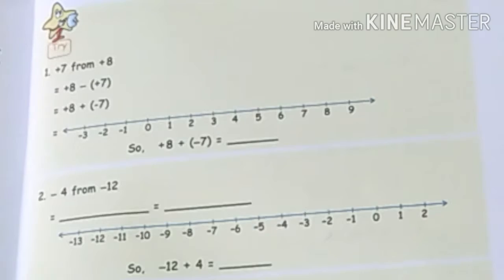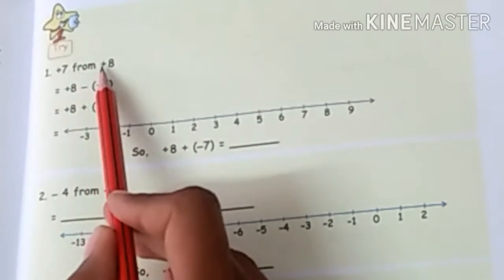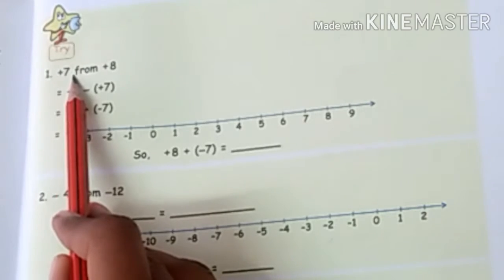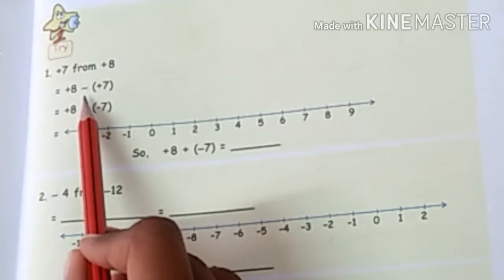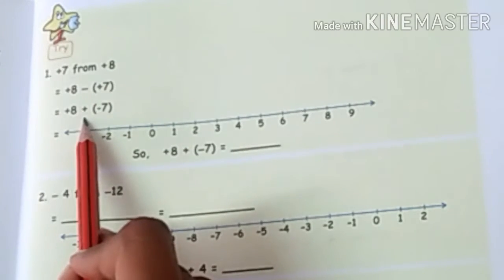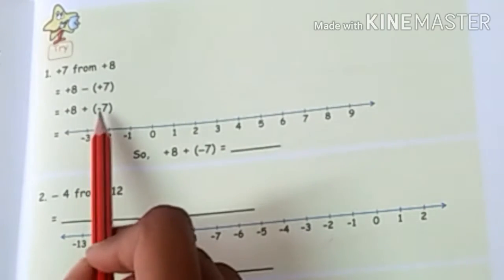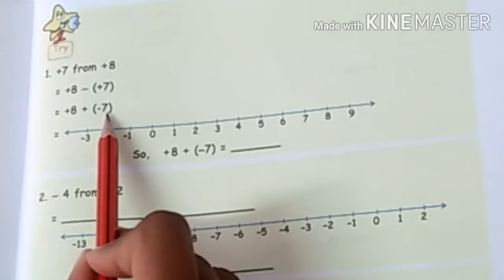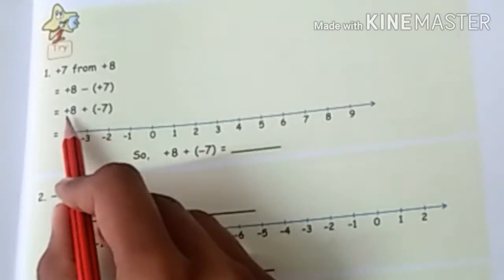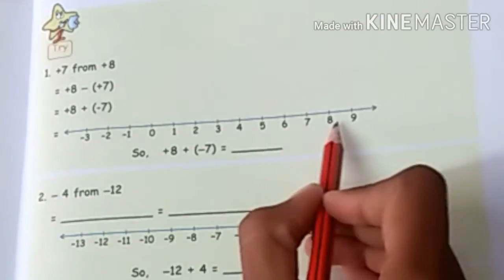First we will do the try part. Question number 1: plus 7 from plus 8. So we have to do plus 8 minus plus 7. When we minus, we will add the opposite sign. So plus 8 plus the opposite of plus 7, which is minus 7.